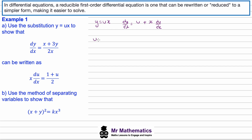Now we have our dy/dx term, we can substitute this expression into our equation. We have u plus x du/dx is equal to x plus 3y, but y is ux, so plus 3ux, all over 2x. We can move the positive u to the right hand side and simplify, giving x du/dx.